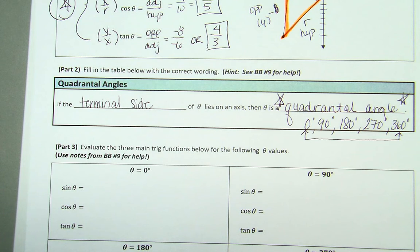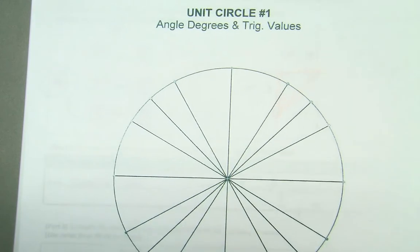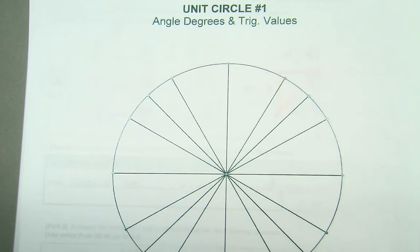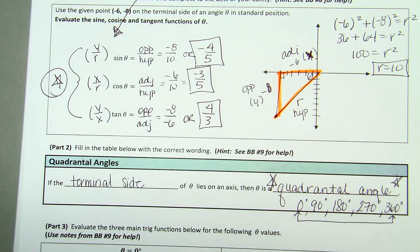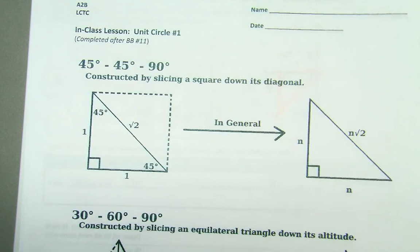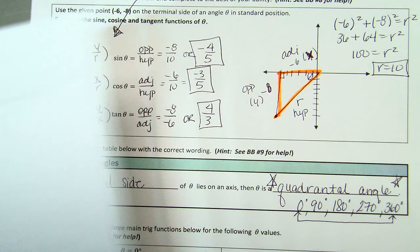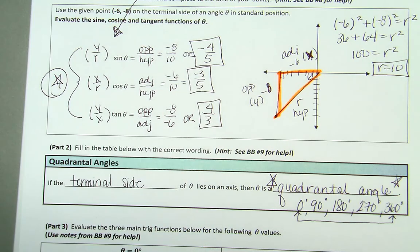Throughout this video you should have Blackboard Assignment 11 in front of you, as well as your unit circle worksheet — Unit Circle Number One — which is on Blackboard. Also have your in-class lesson on Unit Circle One. Make sure you print those off before listening to the full video, or have paper ready to take notes.